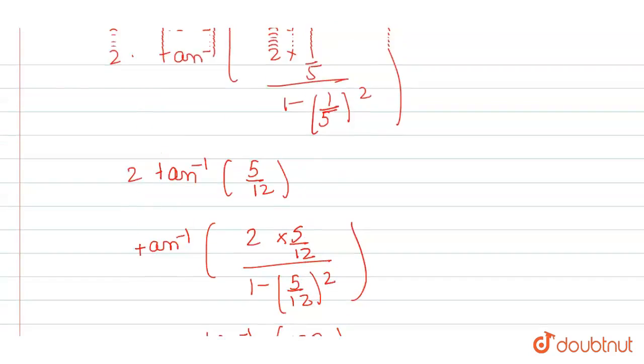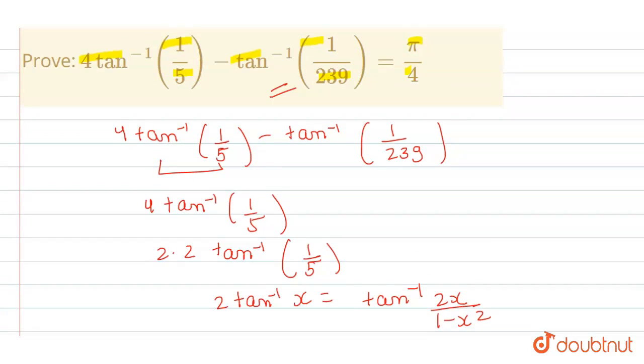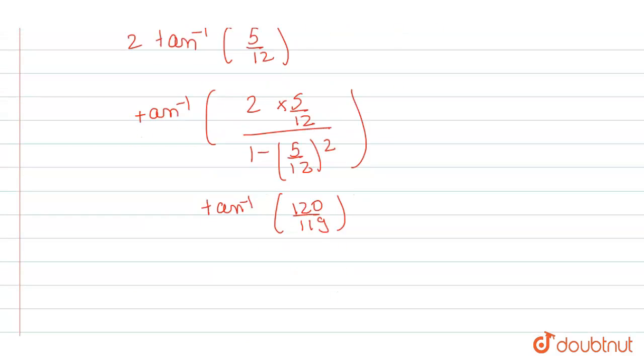Now, we will put this value into our equation. It will become tan inverse of 120 by 119 minus tan inverse of 1 by 239.